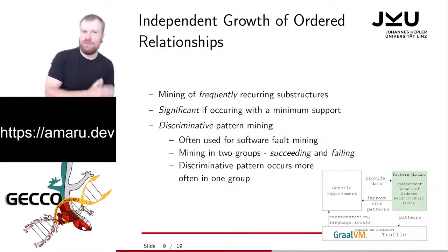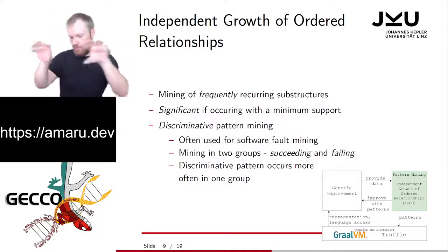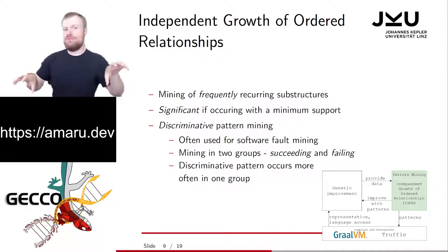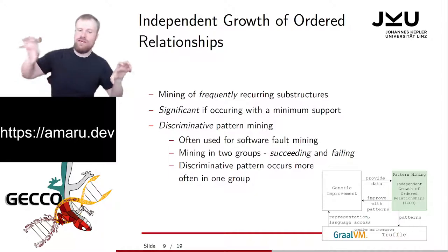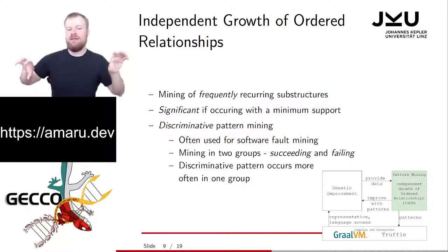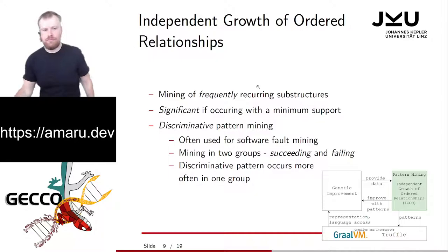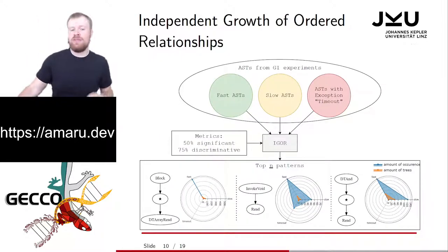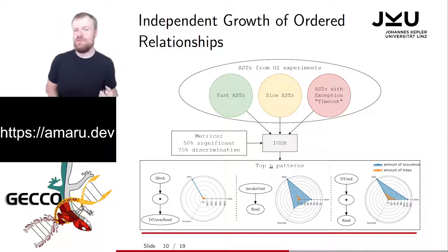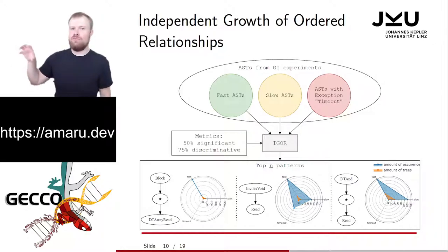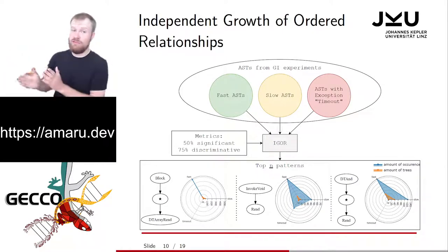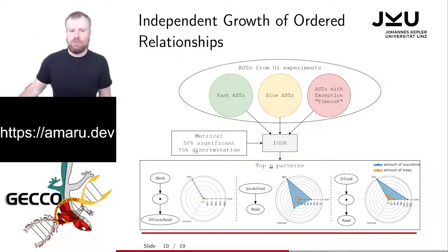Significant means it occurs with minimum support — basically, frequently in at least 50% of all the trees. Discriminative pattern mining means we group all individuals into at least two groups. In software fault mining, we usually use succeeding and failing abstract syntax trees according to a unit test. A discriminative pattern occurs more in the succeeding ones and less in the failing ones, or vice versa. For performance patterns, we split into three groups: the fast abstract syntax trees, the slow ones, and those that lead to a timeout — so slow we cannot measure runtime within a limit, or that may never finish due to an endless loop.